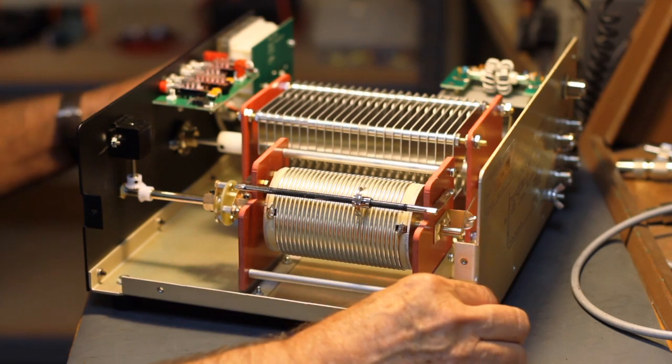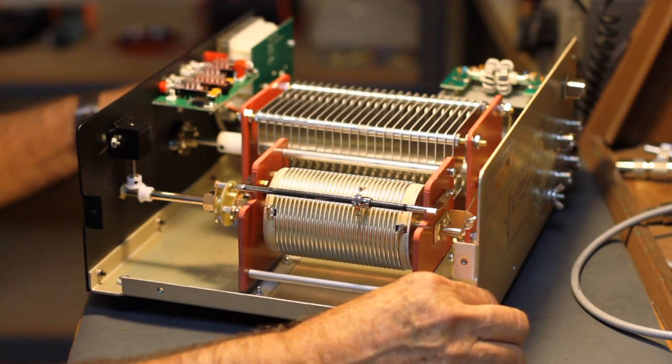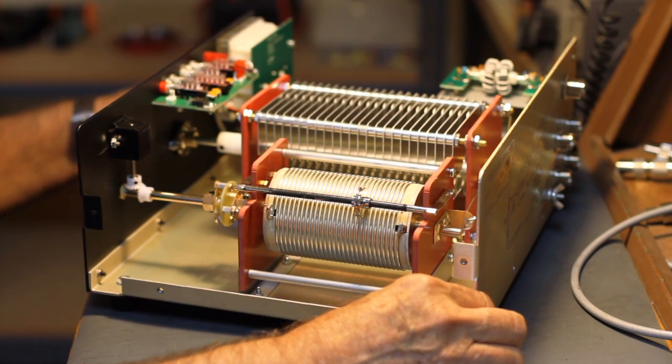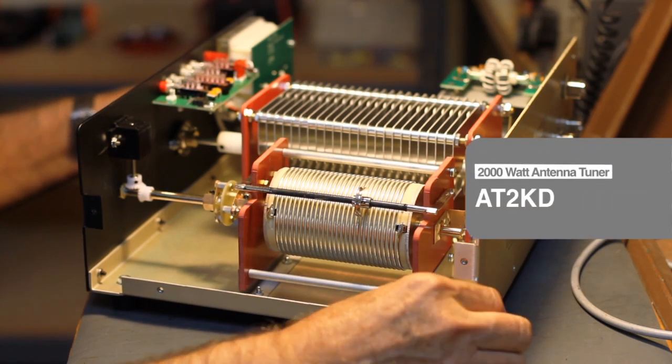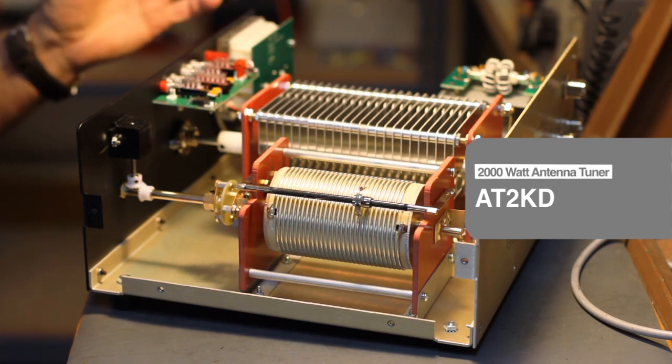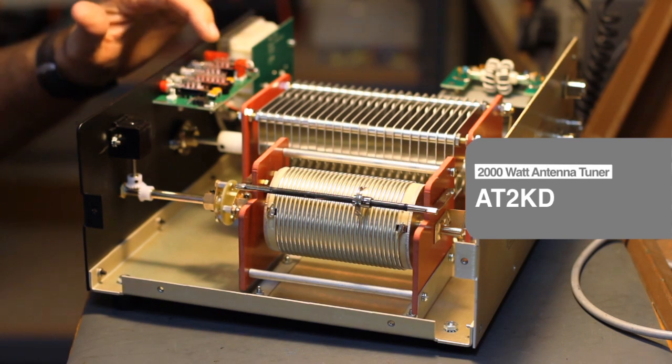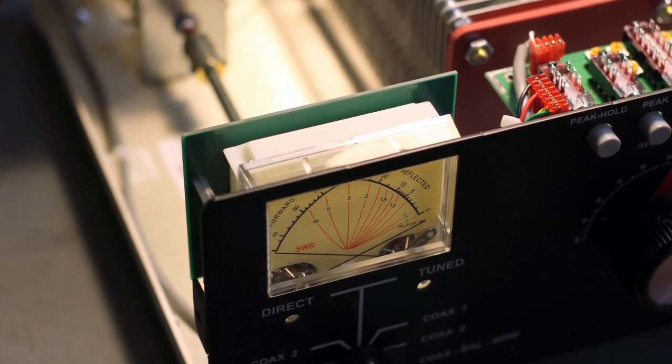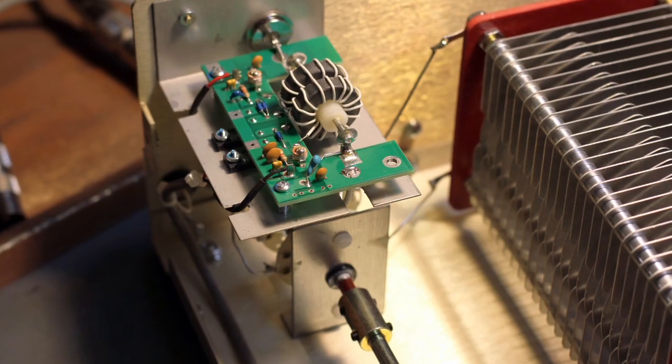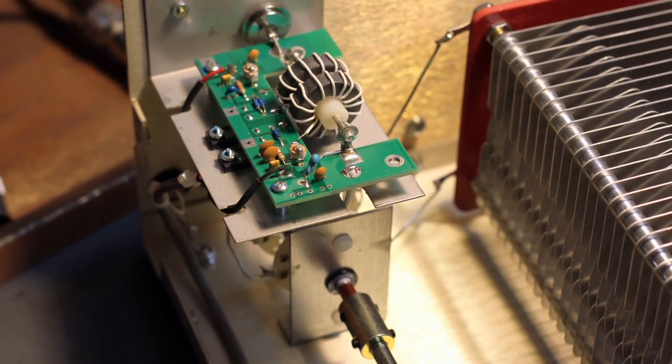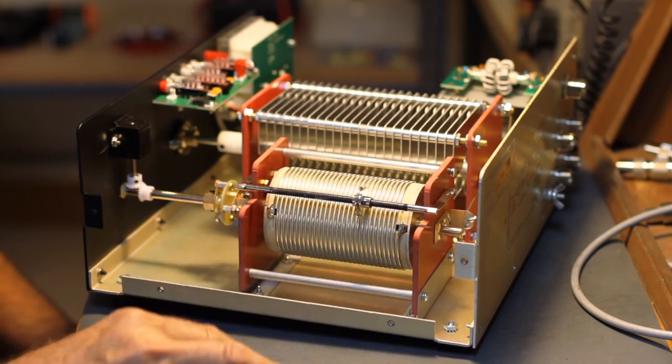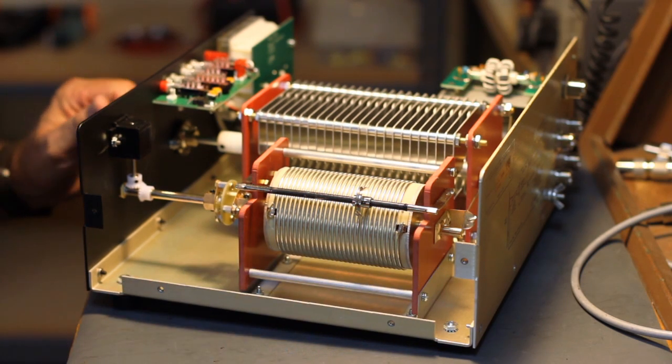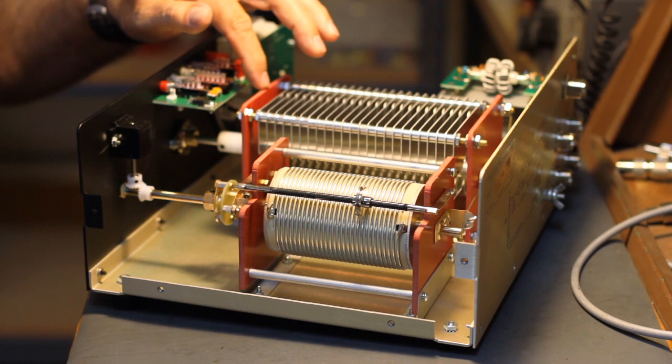This is our second tuner in the lineup, the 1500 watt series. This is called the AT2KD, which is very similar to the AT2K. It shares the same meter board, dual cross needle meter, metering, and the RF coupler, as you can see here. And it shares the same roller inductor. And what is different about this tuner is that it has a differential capacitor.